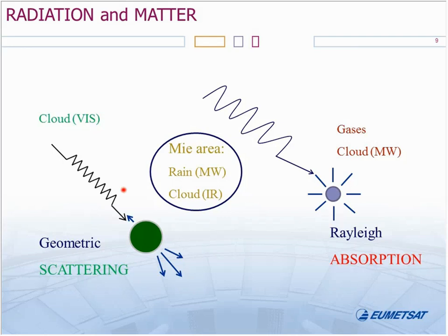The size parameter is the circumference of the obstacle divided by the wavelength, giving an indication of the amount of interaction. If it's close to 1, there's a lot of interaction; if more or less, the interaction decreases — it's optimal around a value of 1, when the circumference is similar to the wavelength. That's the case for cloud, because cloud droplets are about 3 microns in diameter, and the wavelengths we use are also 1 micron or more in the infrared — that's why we see a lot of information from cloud with both visible and infrared.